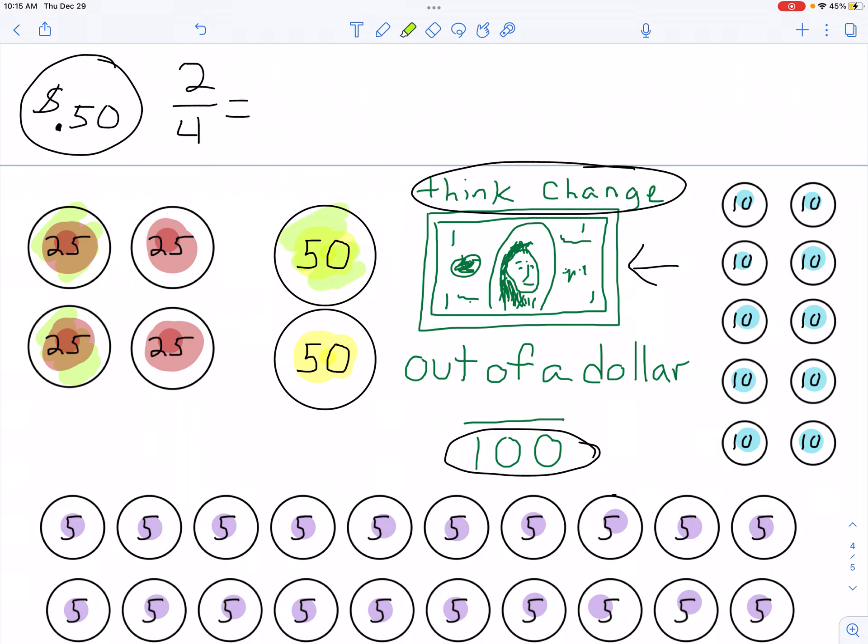If we're talking 50 cent pieces, well, one 50 cent piece makes 50 cents. And there are two 50 cent pieces that make up a dollar.